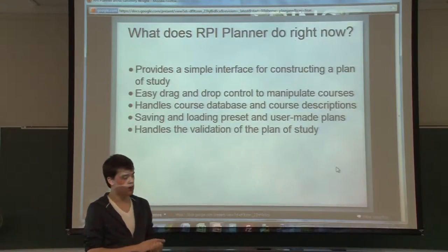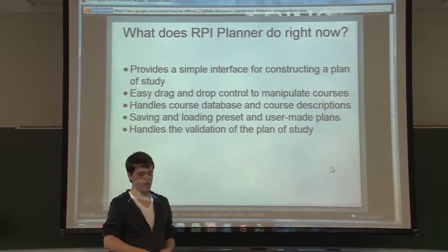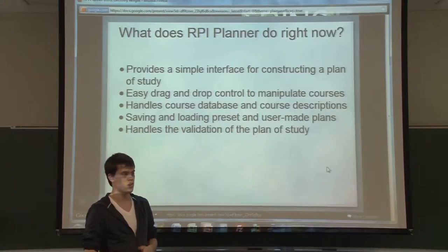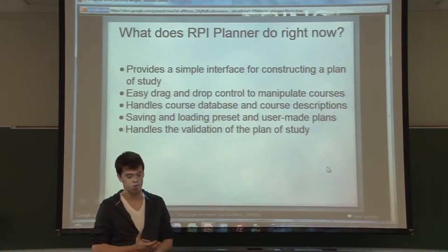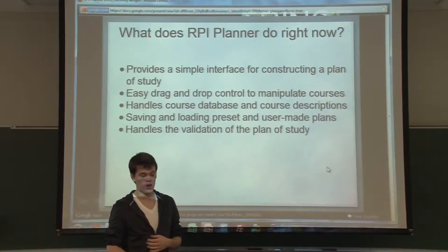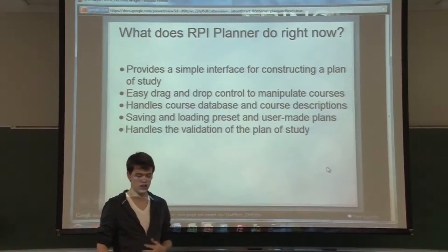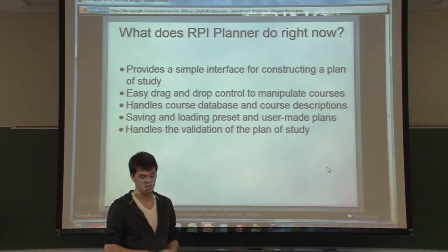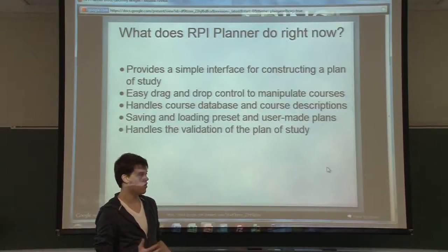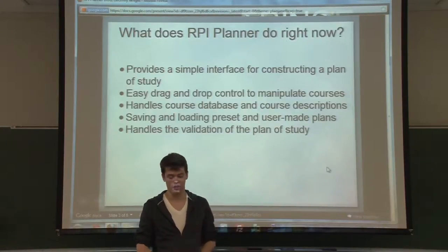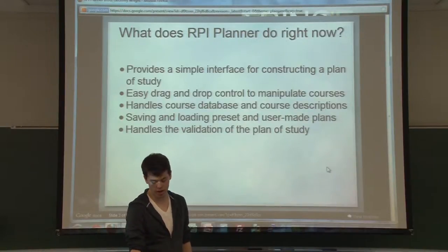It handles a course database and course descriptions so you can see what you're doing. You don't just see a course code or name and have to guess — you can actually look at the course descriptions as well. It also handles saving and loading preset and user-made plans, and it also prints things. A lot of this basic functionality is already in place. It also handles the validation of the plan of study so that you know if it's actually legitimate and can earn you a degree at RPI.